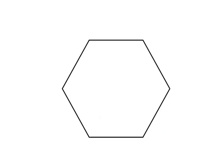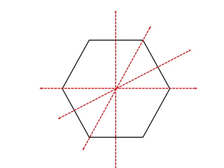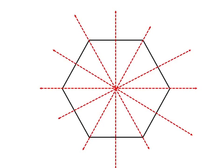And now a regular hexagon, which has six lines of symmetry: one, two, three, four, five, six. Not every pentagon or hexagon has lines of symmetry, but the ones that are regular — meaning all sides are the same and all angles are the same — have the lines of symmetry just shown.